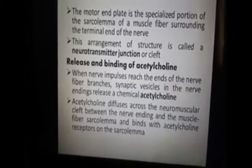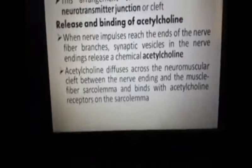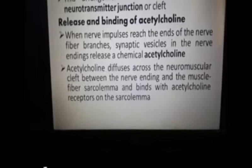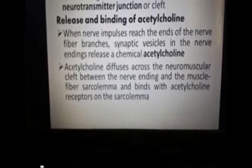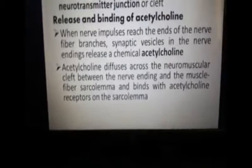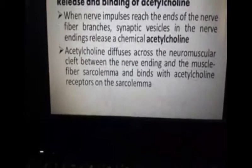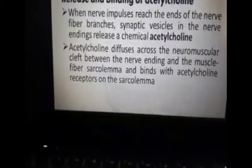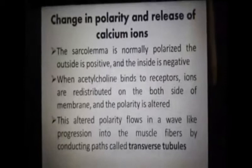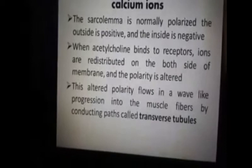Release and binding of acetylcholine. When nerve impulses reach the ends of the nerve fiber, synaptic vesicles in the nerve endings release acetylcholine. Acetylcholine diffuses across the neuromuscular cleft — between the nerve endings and the muscle fiber sarcolemma — and binds with acetylcholine receptors on the sarcolemma.